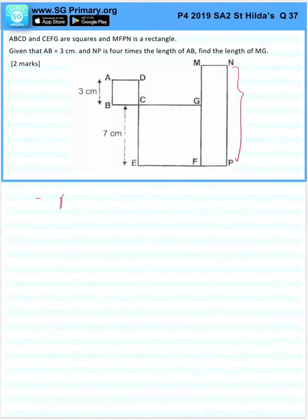AB is 3 cm. NP is 4 times, so NP is 3 times 4 which is 12 cm.